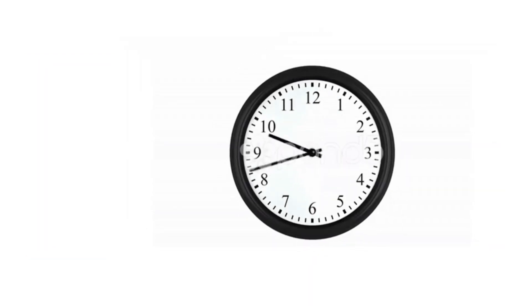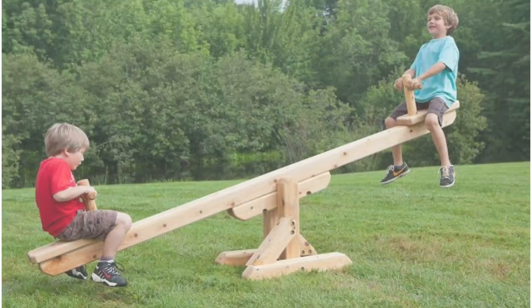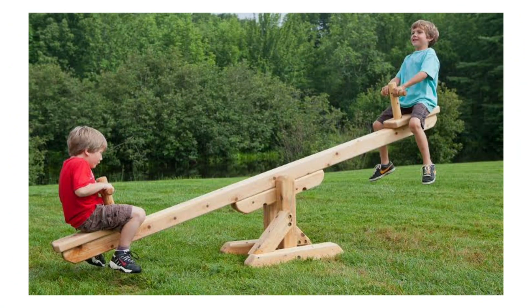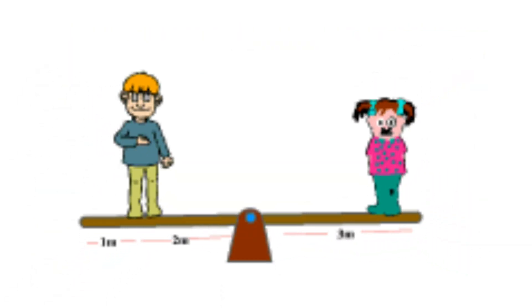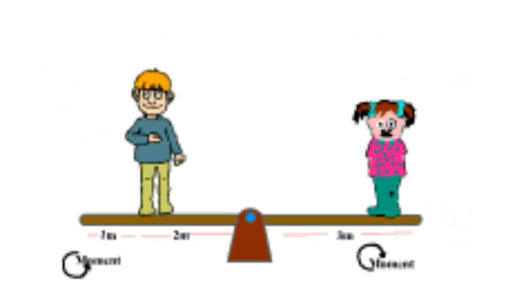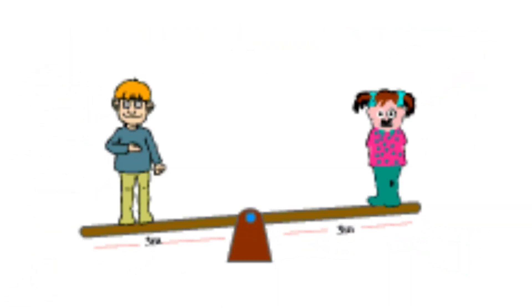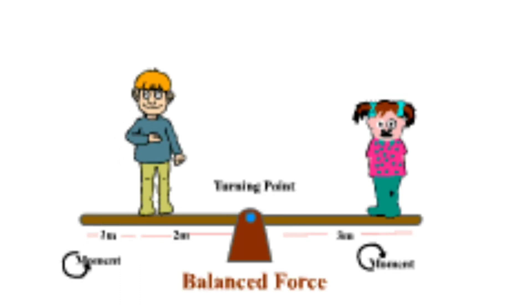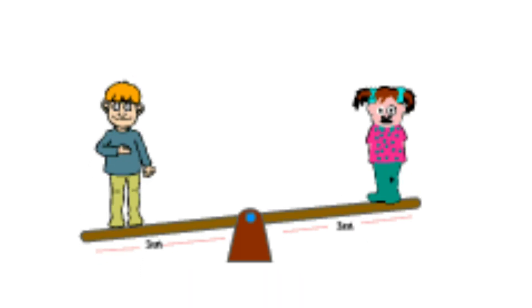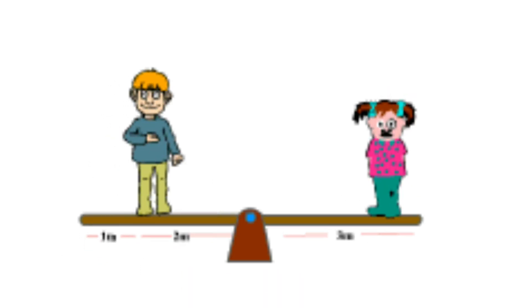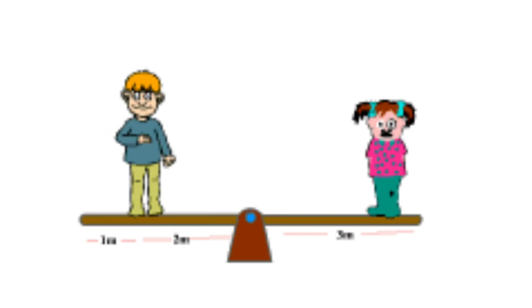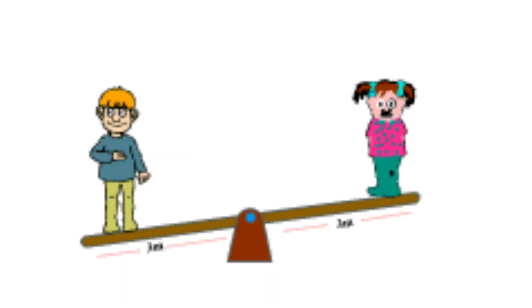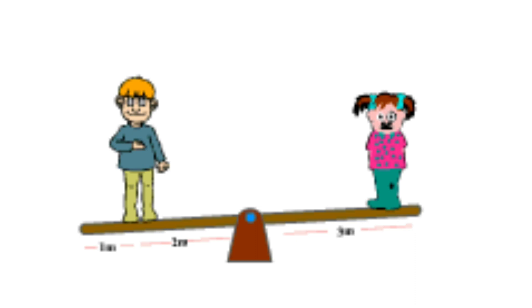Zidha and Zain sit on opposite sides of a seesaw. Zain weighs more than Zidha. Zain realizes that to balance Zidha he must sit closer to the pivot. This is because moment = weight × distance from the pivot. For a larger force to produce the same moment, you must decrease the distance from the pivot.